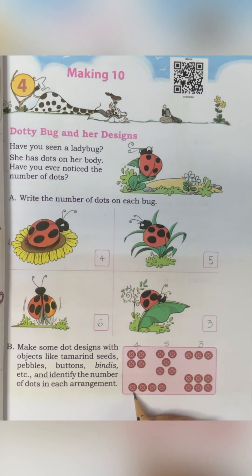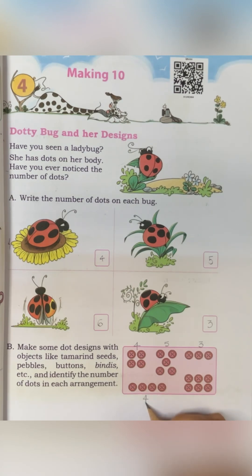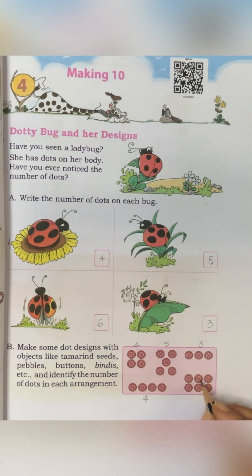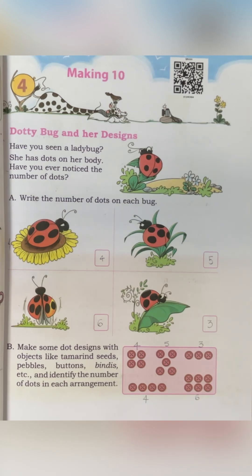Here: 1, 2, 3, 4 — 4. Then: 1, 2, 3, 4, 5, 6 — 6 buttons. You make arrangements like this with bindis, pebbles, buttons, tamarind seeds, and just try to count them.